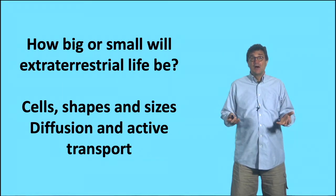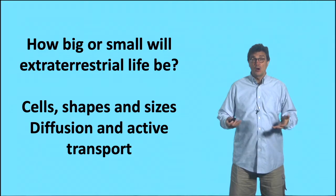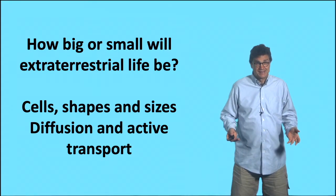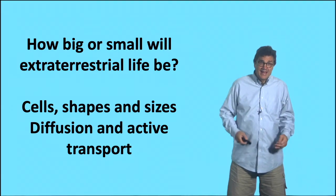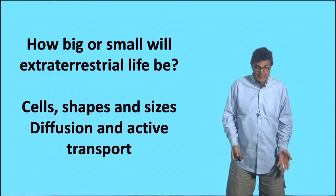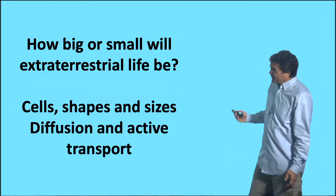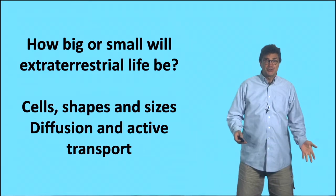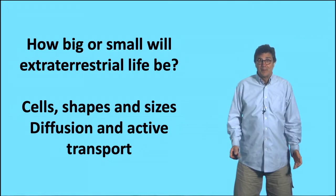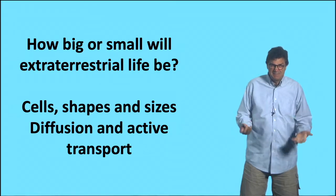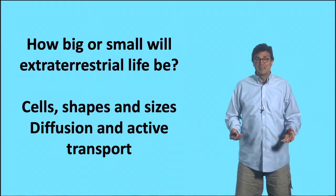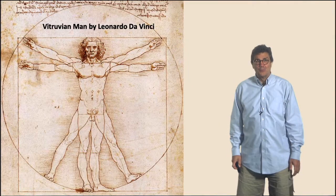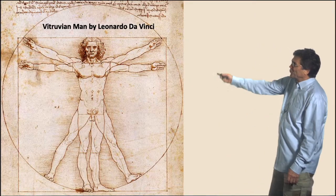One way to answer that is to look at the sizes of life on our planet and the huge diversity of sizes. We're going to look at cell shapes and sizes, and particularly the issue of diffusion and active transport, because that in many ways determines what the size and shape of a life form will be.